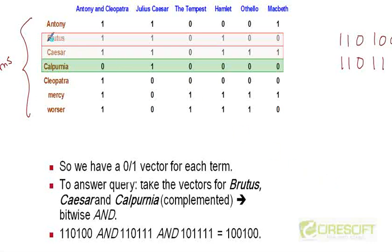Now if the query had been Brutus and Caesar, how do we figure out which documents have both these words? Well we take a bitwise AND of these two vectors. So that would be 0 0 1 0 1 1 or 1 1 0 1 0 0 0.